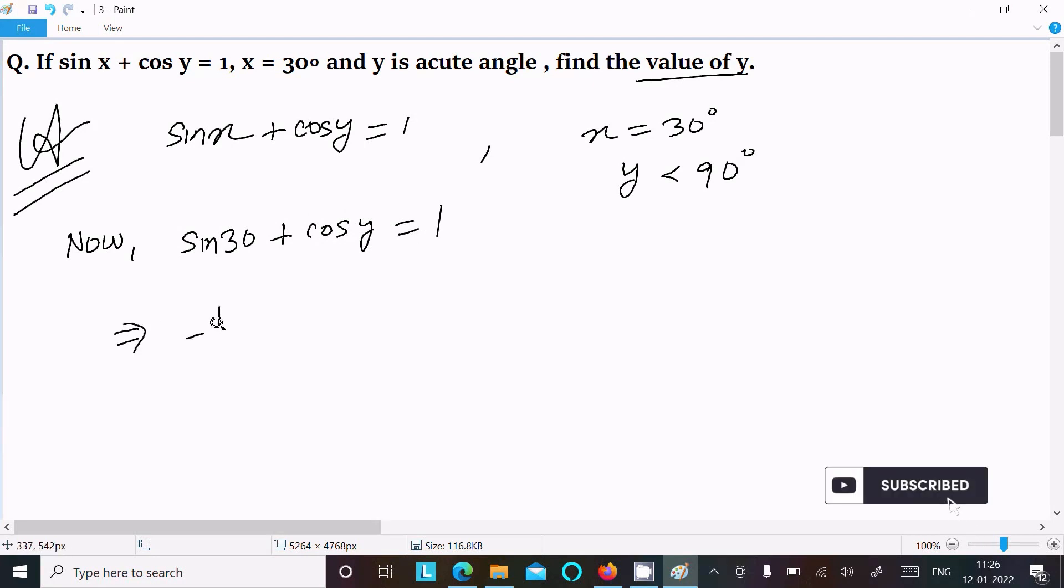Sin 30, the value is 1 by 2, plus cos y equals 1. Now cos y equals 1 minus 1 by 2.